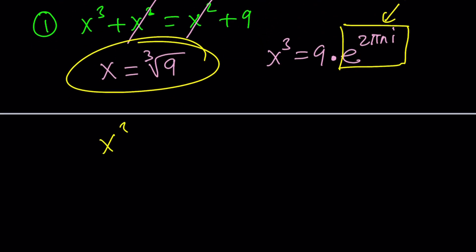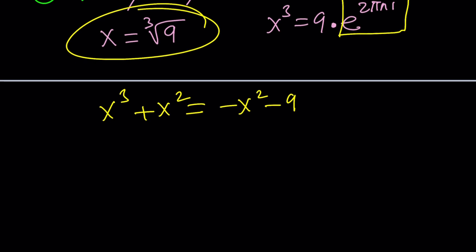The other scenario is going to give us the following. x cubed plus x squared equals the opposite of x squared plus nine, which is negative x squared minus nine. Is this going to give us a good solution? I'm not sure. Let's go ahead and check it out, because I haven't checked it out before.